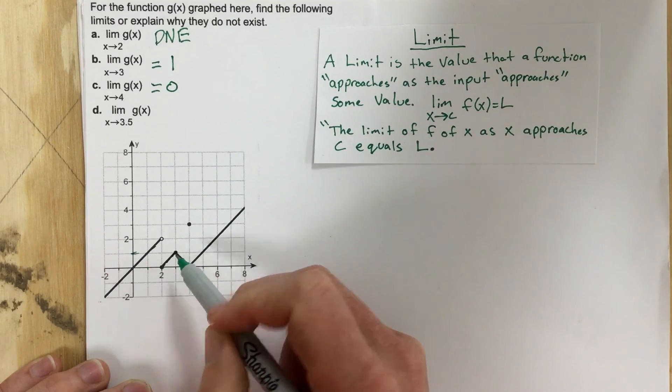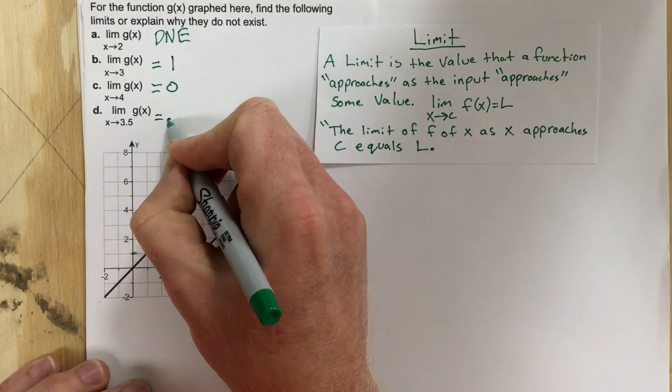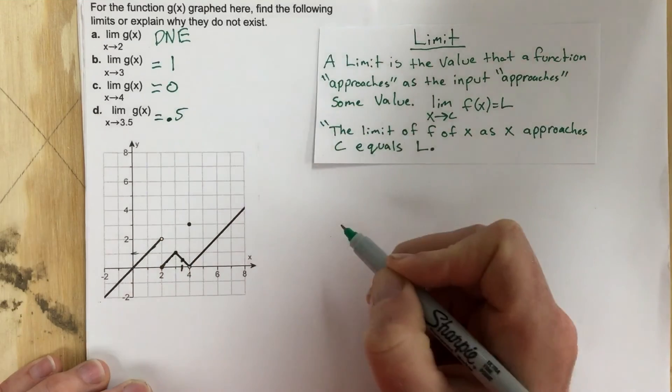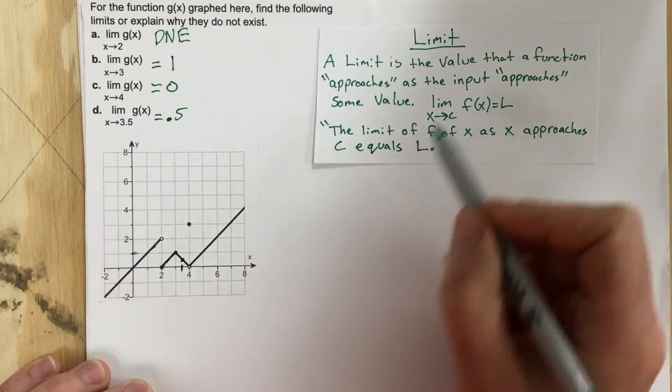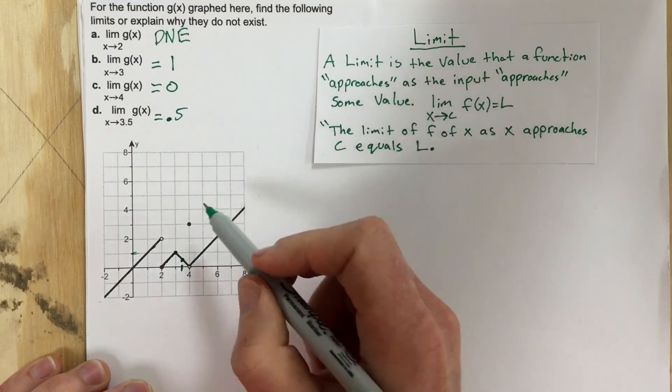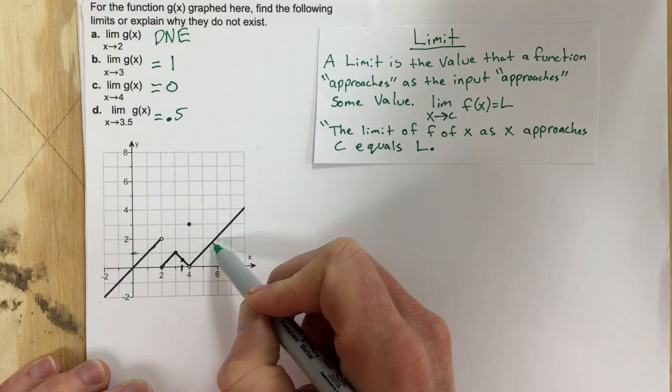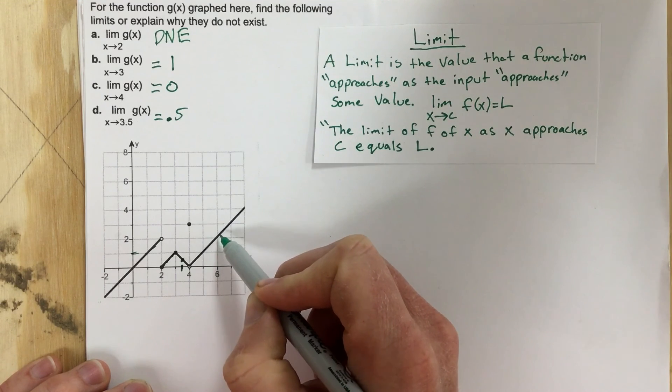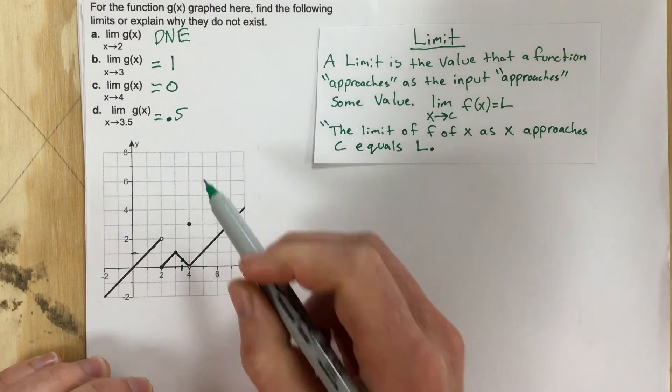So I think this is 0.5 here for the y value. So again, the limit is we're essentially just looking at the function output value as our input value approaches some number.